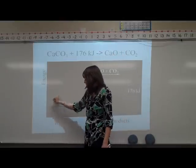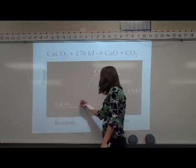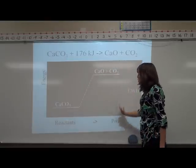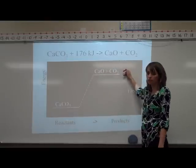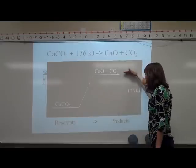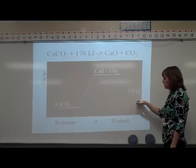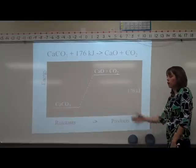As you'll notice, calcium carbonate is at a lower energy level. Then calcium oxide and carbon dioxide are at a higher energy level. It actually requires energy to make this reaction happen. You have to add heat to it for this reaction to happen. You have to add 176 kilojoules to make this reaction occur and move forward.